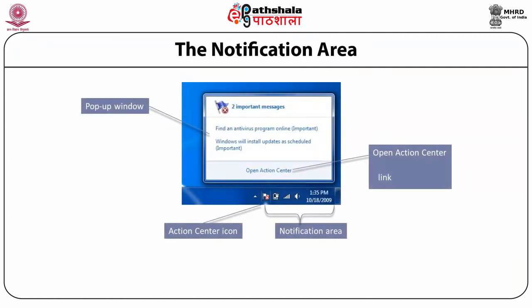The notification area alerts you to important information about activities happening behind the scenes on your computer. A red circle with an X on the notification icon indicates that a message is available — click the notification icon and a pop-up window displays the information. The notification area provides information on detection of a new device, availability of software updates, or recommended maintenance and security tasks. Clicking 'Open Action Center' provides more information.